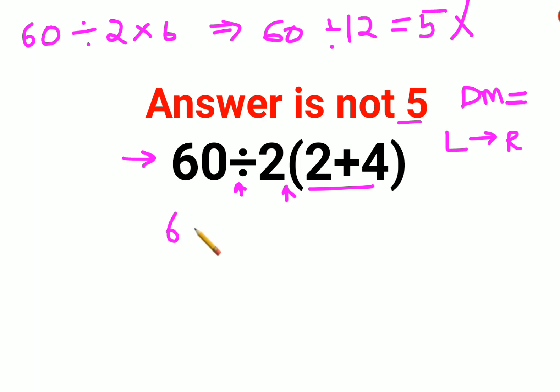But in this case, first we will solve the bracket which is 2 plus 4, which is 6. Like I said, we will always go from left to right. So first we will do 60 divided by 2, that gets you 30 into 6, that gets you 180.